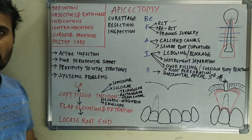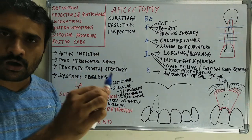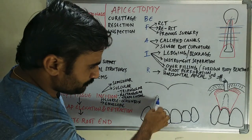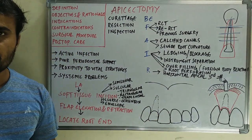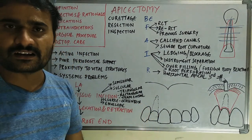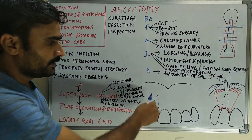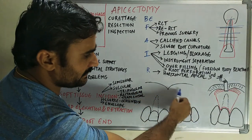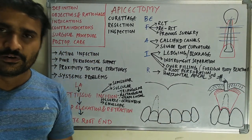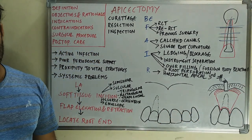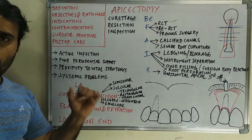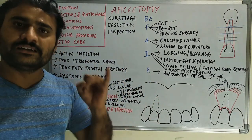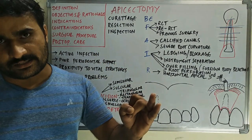The surgical procedure can be comfortably performed under local anesthesia. For example, for the upper right lateral incisor, we give an infraorbital block on the right side and infiltration in the midline on the opposite side. Local anesthesia provides both anesthesia of the region and hemostasis, i.e., bleeding control.